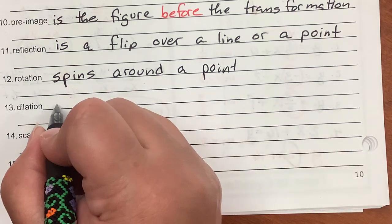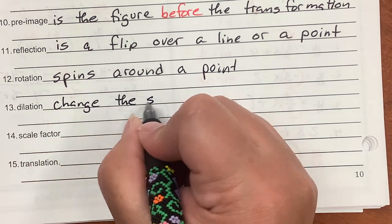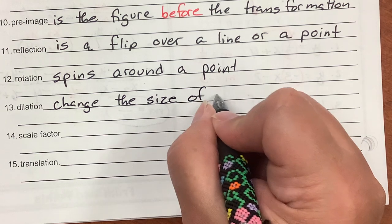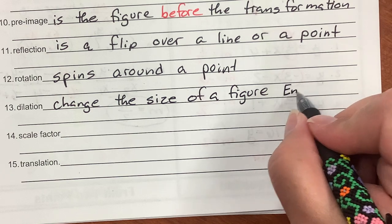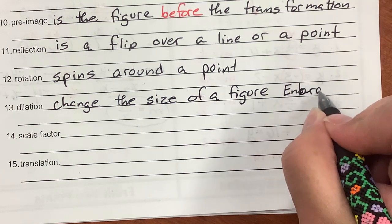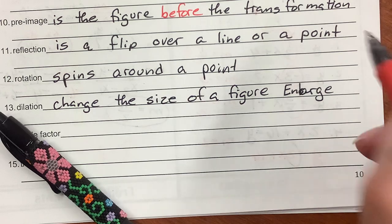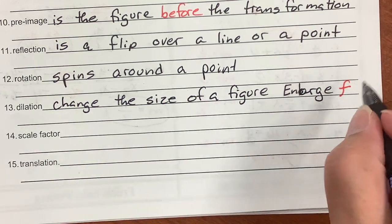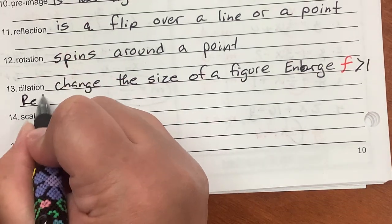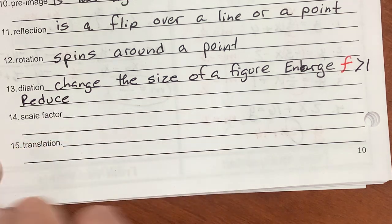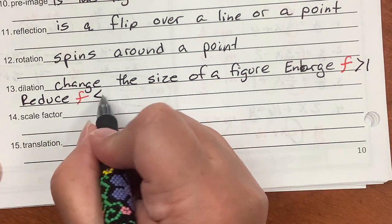A dilation is when you make something larger or smaller. It has a scale factor - that's the thing you multiply by. A dilation changes the size of an object. It either enlarges, and that's when the scale factor F is greater than 1, or to reduce, and the scale factor F is less than 1.